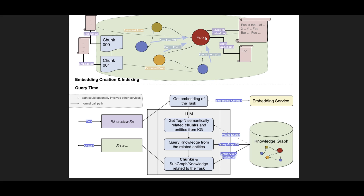Not only do I have these relations, but I also have the embedding of each entity generated by, let's say, a word embedding model. Now when I query — for example, 'tell me more about foo' — first we generate the embedding of the question using an embedding model, or any embedding model you have in mind.